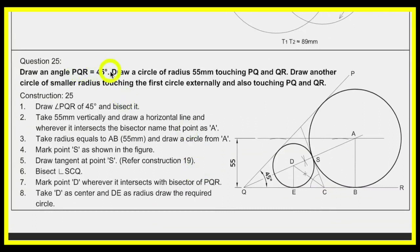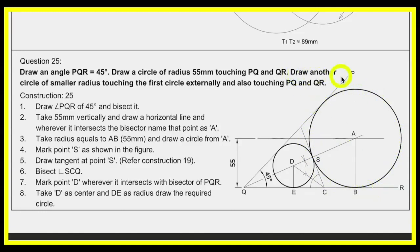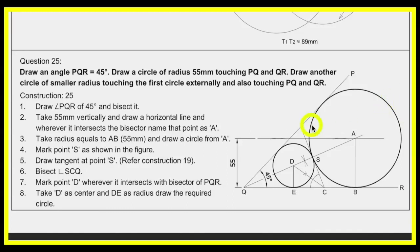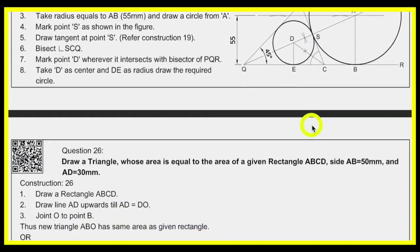For drawing a circle of radius 55 mm touching PQ and QR of angle PQR: draw the angle, draw 55 mm offset and bisect the angle to get point A. From A to B draw the circle. For a smaller circle inside, draw a tangent at point S and bisect angle SCE to get the required center point. You can similarly practice drawing a larger circle outside.